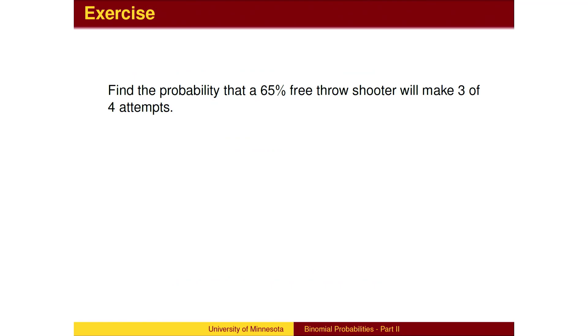Here's an example. You may wish to pause the video to work out the answer. There are four choose three, or four possible strings. Three shots are made with 65% probability, and one missed with 35% probability, for a total of 38.45% chance.